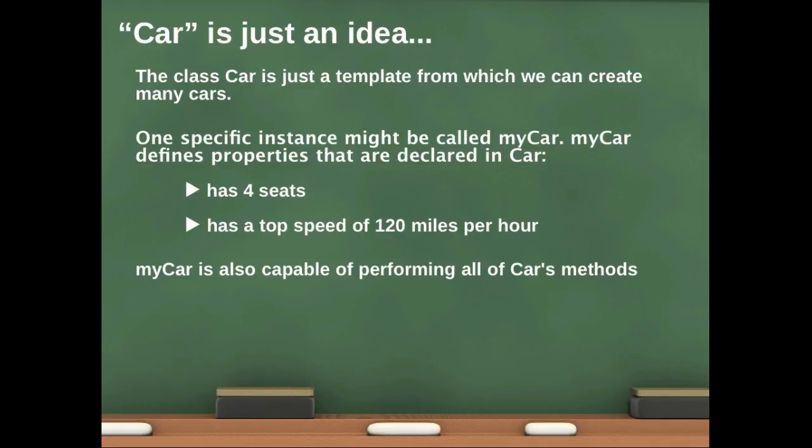So one specific instance might be called myCar. We can talk about myCar because we can talk about myCar in terms of it being blue, it having four seats, it having a top speed of 120 miles an hour, and so forth.